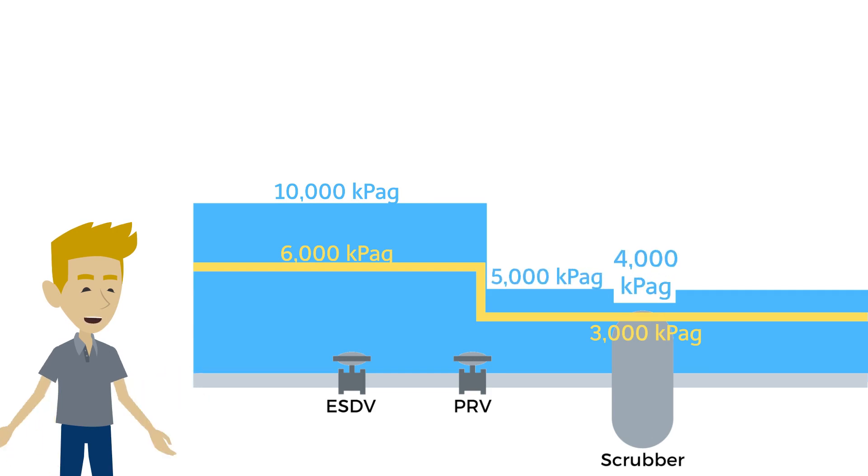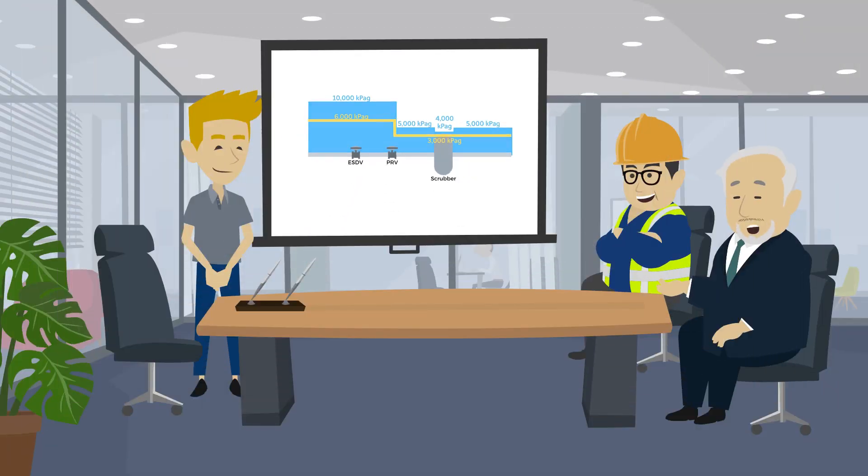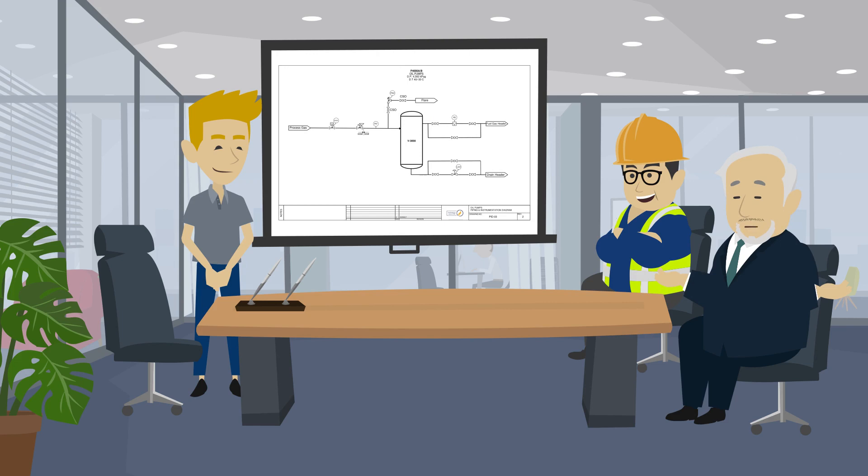The vessel is rated to 4000 kPaG, and the downstream piping to the fuel gas takeoffs is also 300lb. What are the biggest hazards associated with this system?